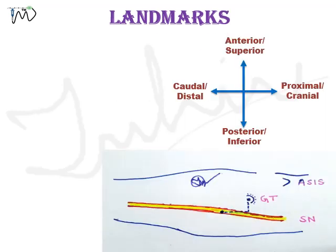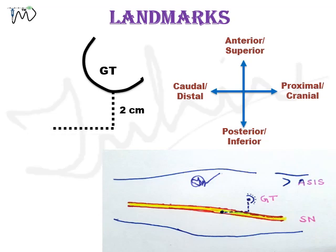Let's draw the landmarks for Gardini's approach. First, we identify the greater trochanter. Then a 2 cm line is drawn posterior or inferior to it, and 3 to 4 cm distal or caudal to the first line. This red cross mark will be the needle entry point for Gardini's approach.